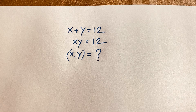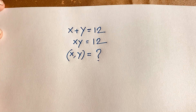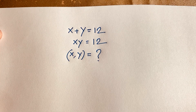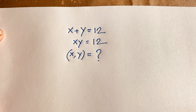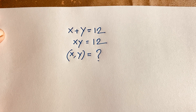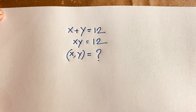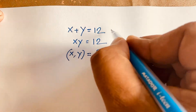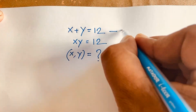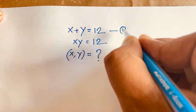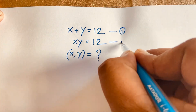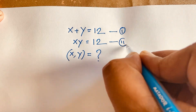Hello everyone. In this video we have solved this interesting math olympiad question. x plus y is equal to 12, and x times y is equal to 12. What is x and y? How to solve this question? This is our first equation and this is our second equation.